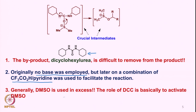In general, DMSO is used in excess, and the main role of DMSO is to get activated by DCC. So DCC activates DMSO, forming an intermediate of this type where E is part of the dicyclohexylcarbodiimide and there is a positive charge. The oxygen of DMSO gets activated by DCC, the alcohol attacks onto this carbon, and this group leaves.